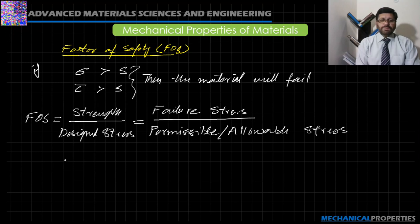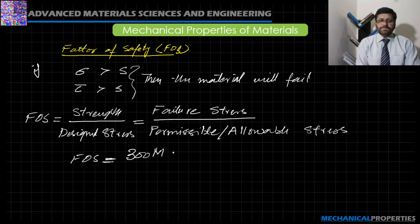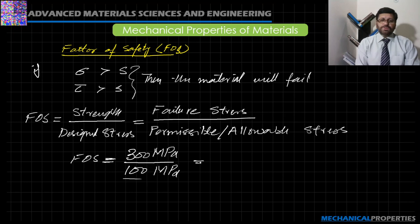For example, if a material's strength is 300 MPa, as a designer we would say the permissible or design limit should be up to 100 MPa — the material should not be loaded beyond 100 MPa. So we get a factor of safety of 3, and this is a dimensionless value.